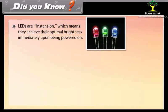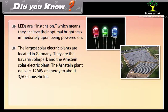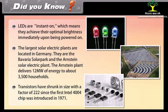LEDs are instant-on, achieving optimal brightness immediately upon being powered on. The largest solar electric plants are located in Germany — the Bavaria Solar Park and the Arnstein Solar Electric Plant, with the Arnstein plant delivering 12 megawatts to about 3,500 households. Transistors have shrunk in size by a factor of 222 since the first Intel 4004 chip was introduced in 1971.